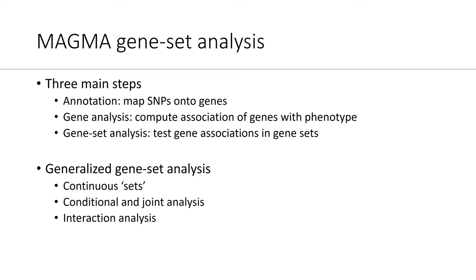Because MAGMA uses a very general linear regression framework that can easily be extended, it's straightforward to use continuous sets. Instead of a dichotomous set where genes are either a member or not a member of the gene set, you can have a quantitatively defined set of genes where every gene has a value indicating how likely it is to be part of a gene set, or indicating the expression level of a gene in a cell type, where the cell type is the gene set. It also allows conditional, joint, and interaction analysis, as explained in part two of today's lectures.